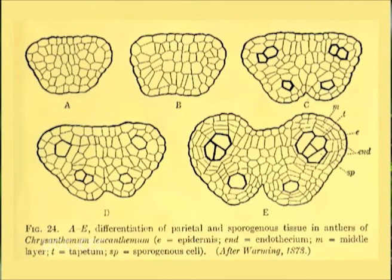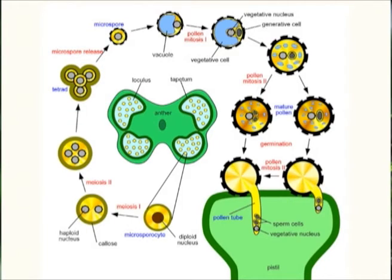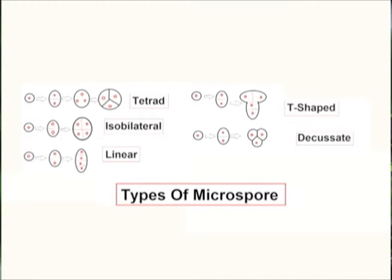The sporogenous cells form microspore mother cells or pollen mother cells and later divide by meiosis to form haploid microspores or pollens. Each microspore mother cell forms four haploid microspores after meiotic division. The four haploid microspores are closely associated in a group due to callose deposition between them, and can be arranged in various types: tetrahedral, isobilateral, linear, inverted, or decussate tetrad-shaped arrangements.